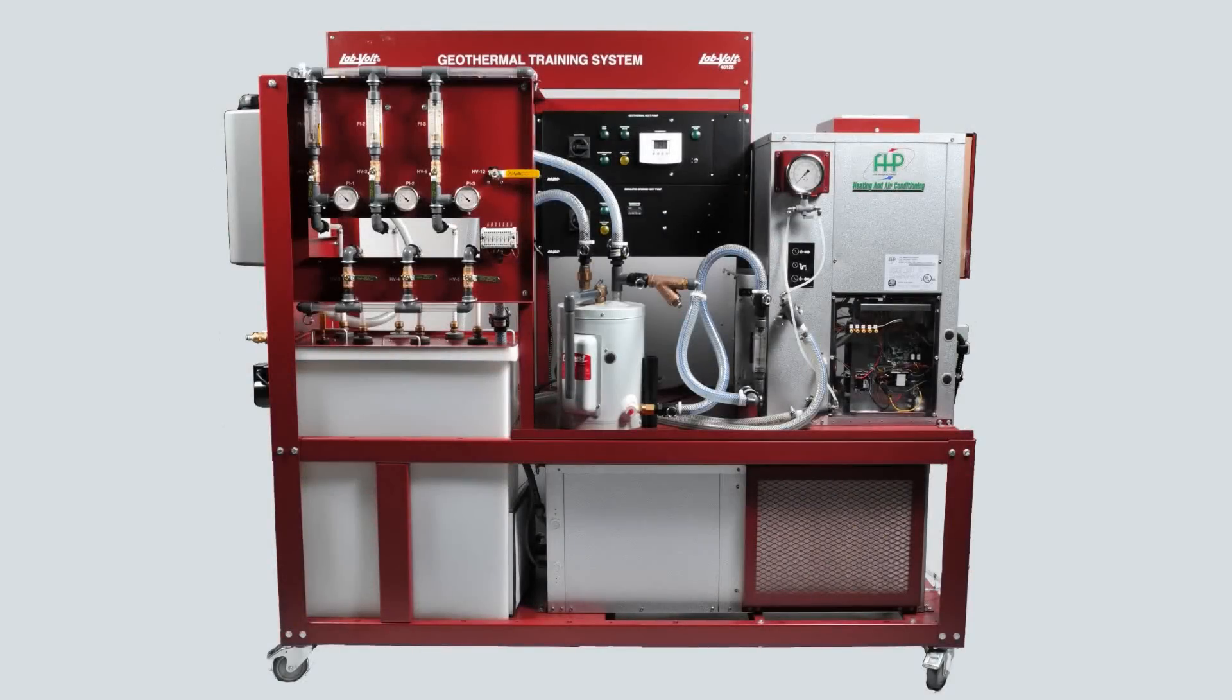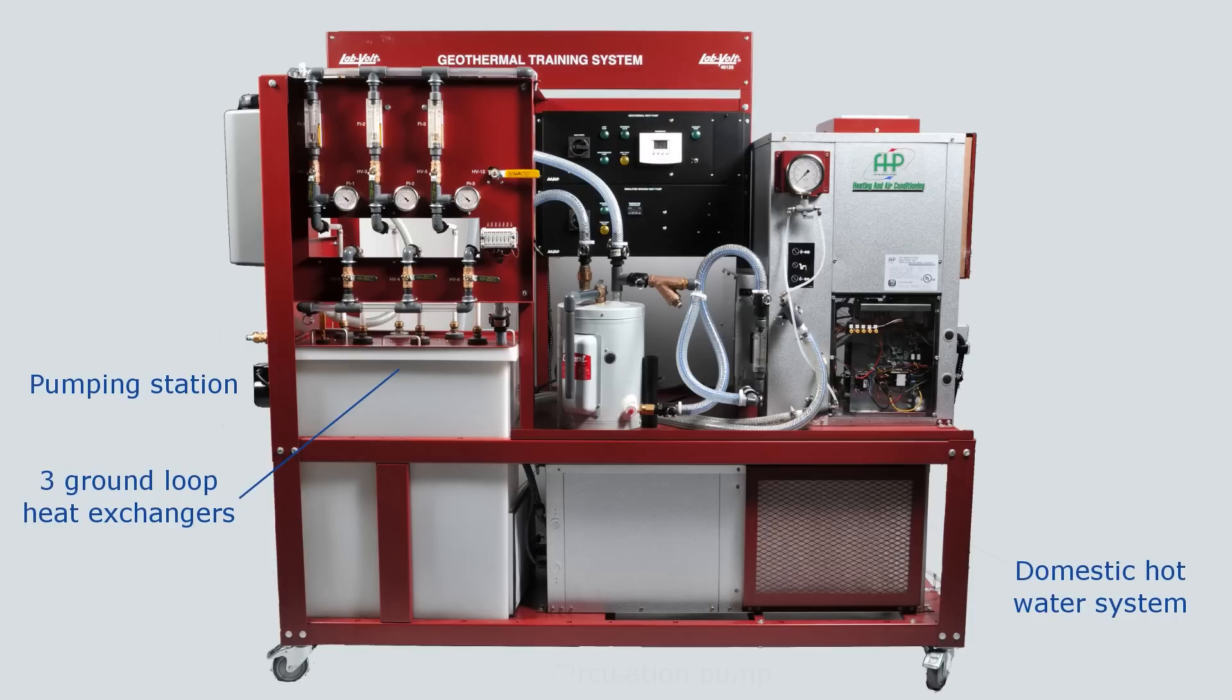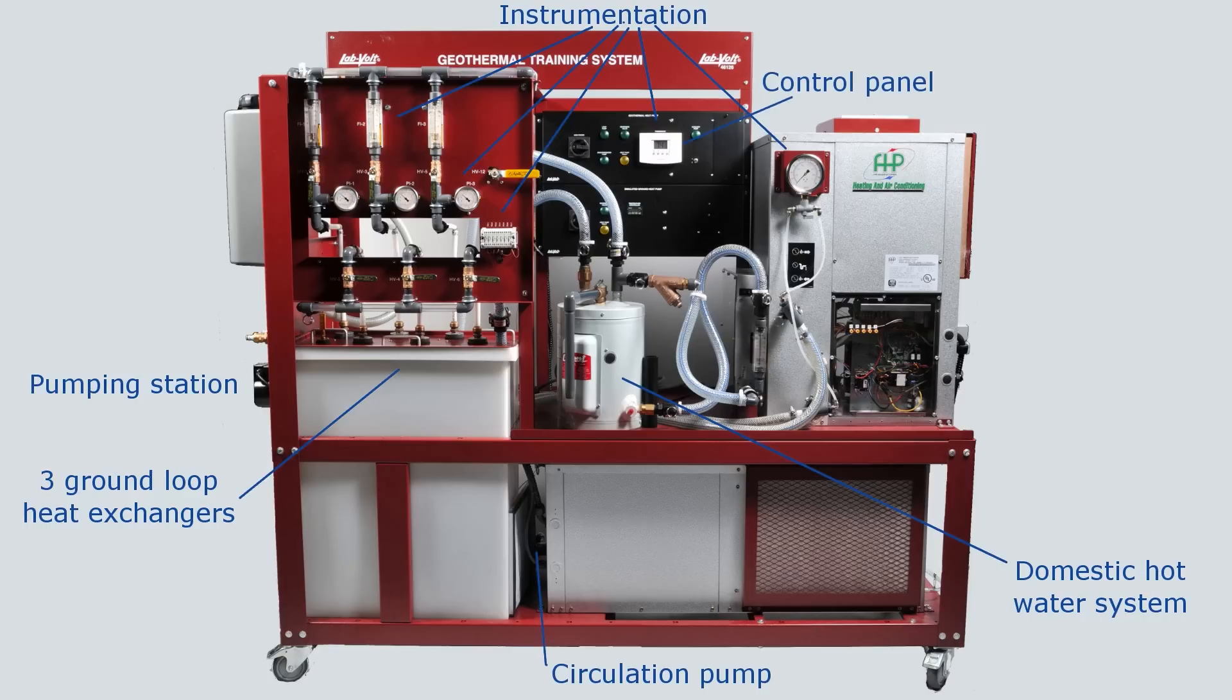The training system includes a geothermal heat pump, three ground loop heat exchangers, a pumping station, a domestic hot water system, a circulation pump, a control panel and the instrumentation required to measure the operating parameters of the system, including all the security devices required to protect the user and the equipment.